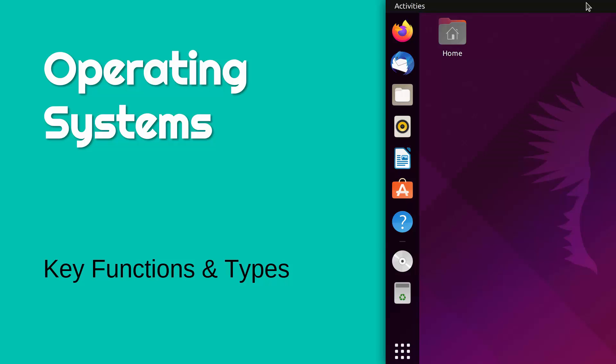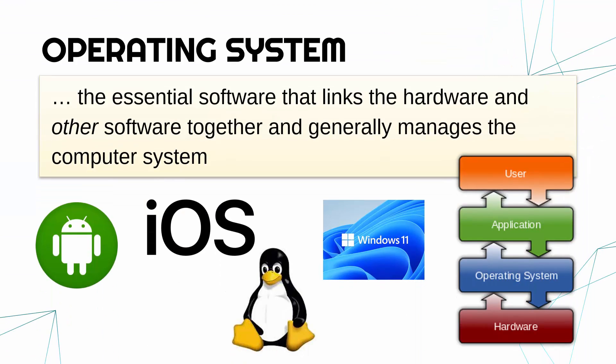Now looking at arguably the most important bit of software on your computer: the operating system. We're going to go through its main functions and a couple of types of operating systems. An operating system is often shortened to just OS. This is the essential software which links the hardware and other software together and generally manages the computer system.